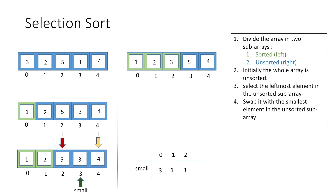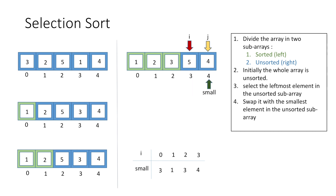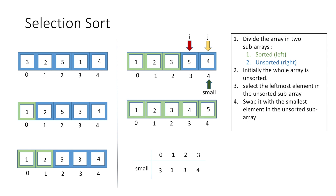Incrementing i by 1 and equating small to i, both i and small have index 3. Using j, 4 is smaller than 5, so we equate small to j and small now has index 4. As there are no more elements, we perform the swap operation, resulting in a fully sorted array.